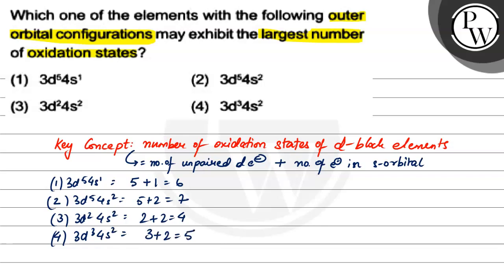Then we have 3d³4s², which is 3 plus 2, which is 5. So clearly, if we look at simple mathematics, the largest is option 2. That means the largest number of oxidation states will be of 3d⁵4s², which is option 2. Option 2 is the correct option. I hope you all understand. Thank you very much. All the best.